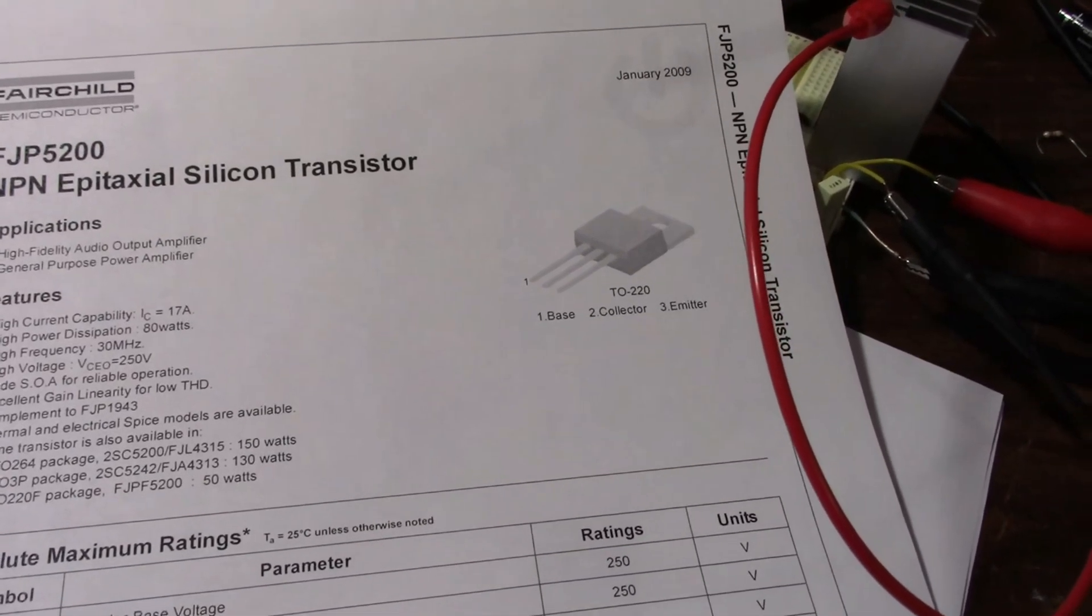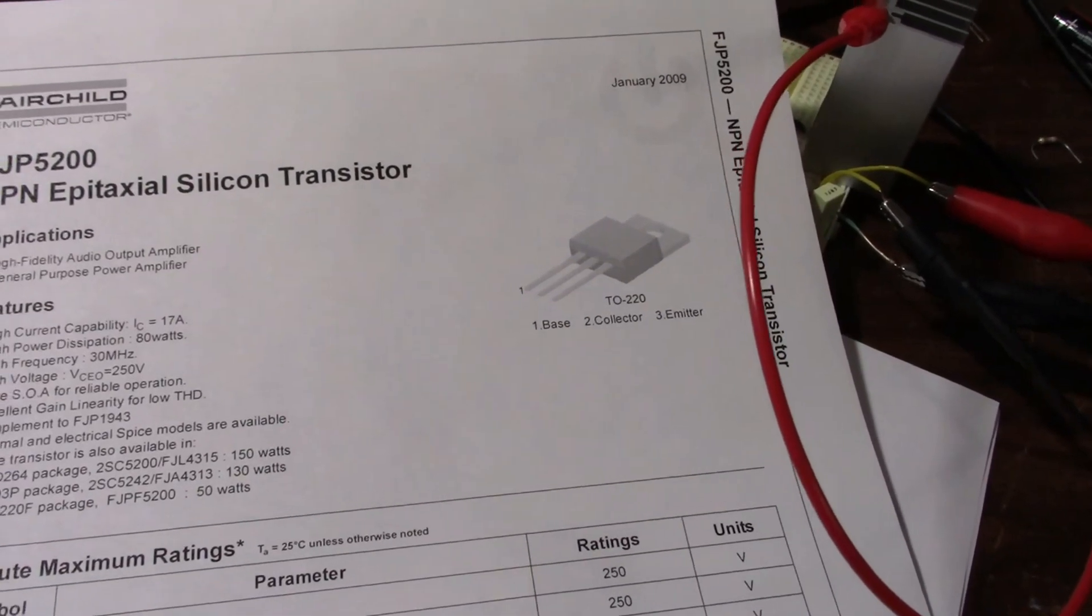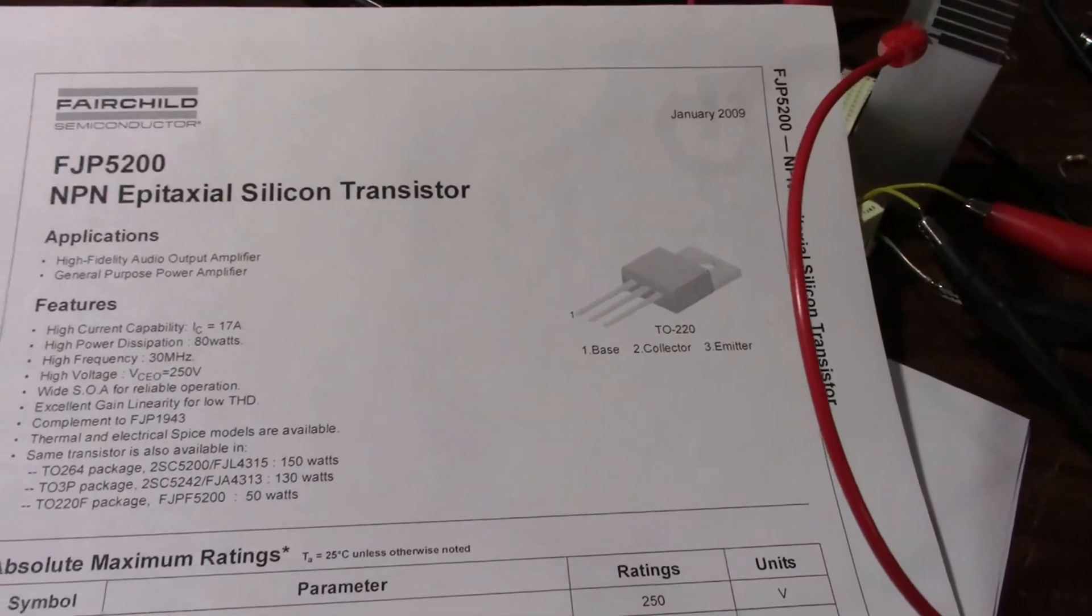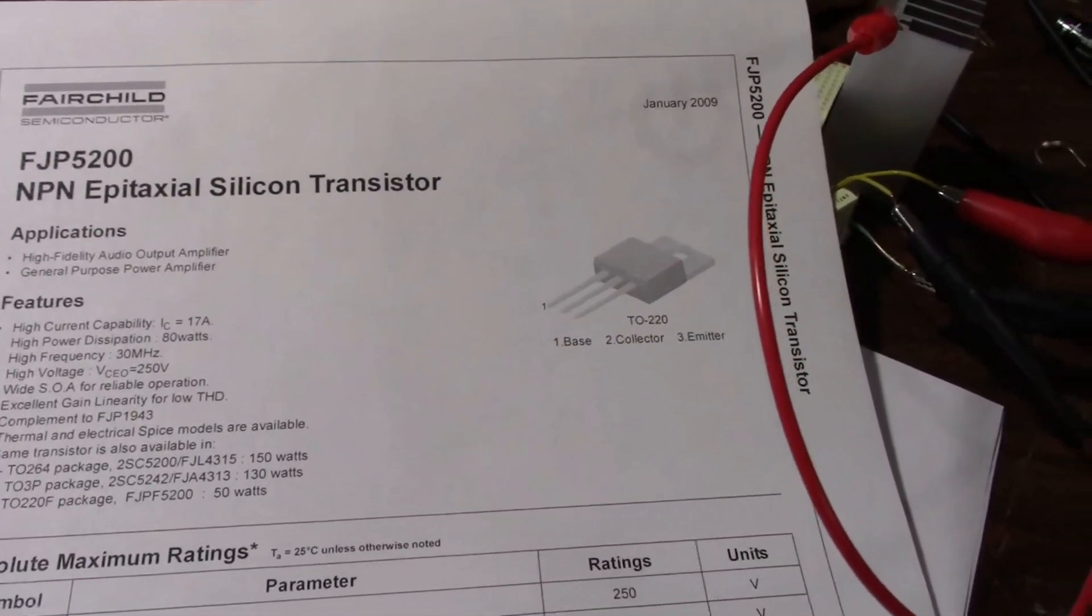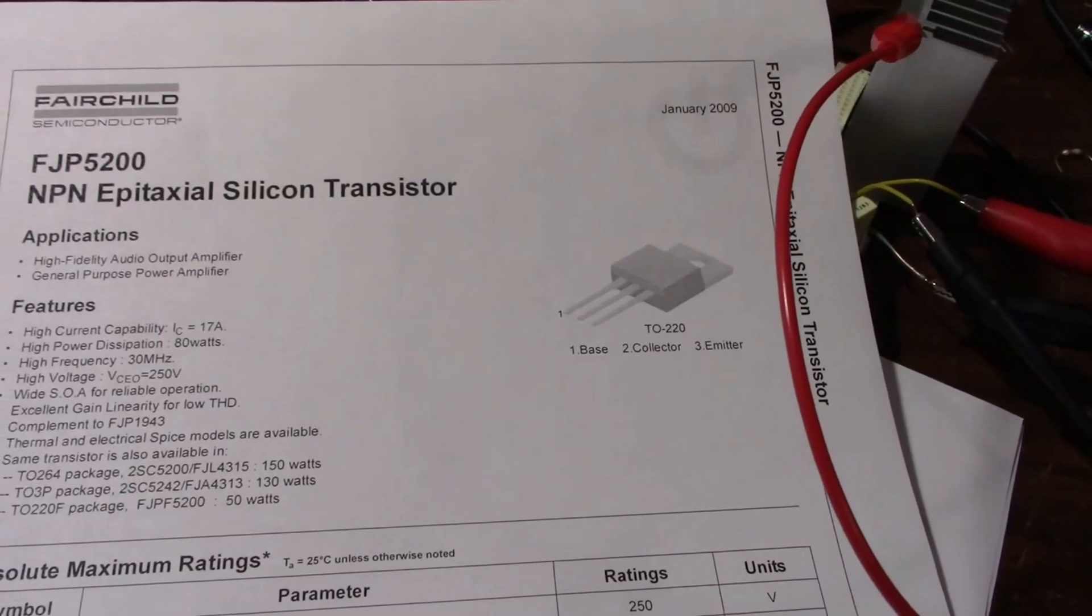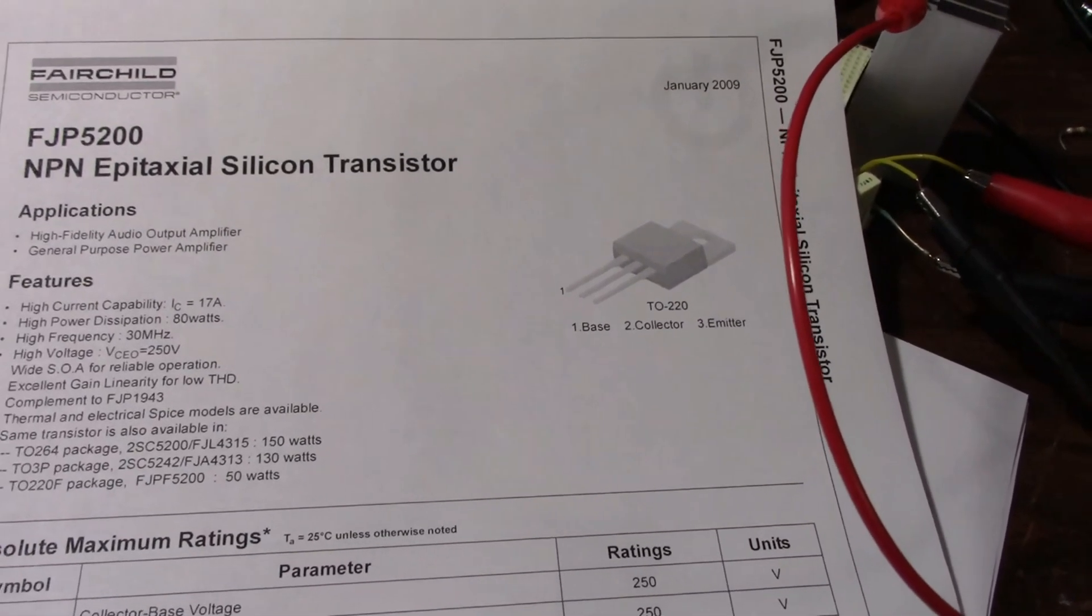So now I want to find another cheap transistor that I can use with the Easy Amp. I might look at the MJE3055 and its 2955 complement. I'm not real fond of those transistors, but they might work. But I still want to find a better transistor that's cheap, under a dollar, to keep the price down on the Easy Amp project.